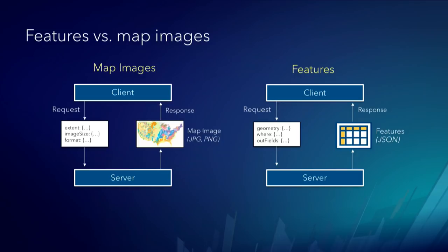When a client requests features, it's requesting geometry within a bounding box — give me all the features in this extent. It also specifies a where clause and outfields. Outfields lets you specify what information you need: do you really need all 100 attributes? Maybe you just need the geometry and a few attributes, or maybe only attributes if you already have geometry from somewhere else. So you get a lot of different options there.